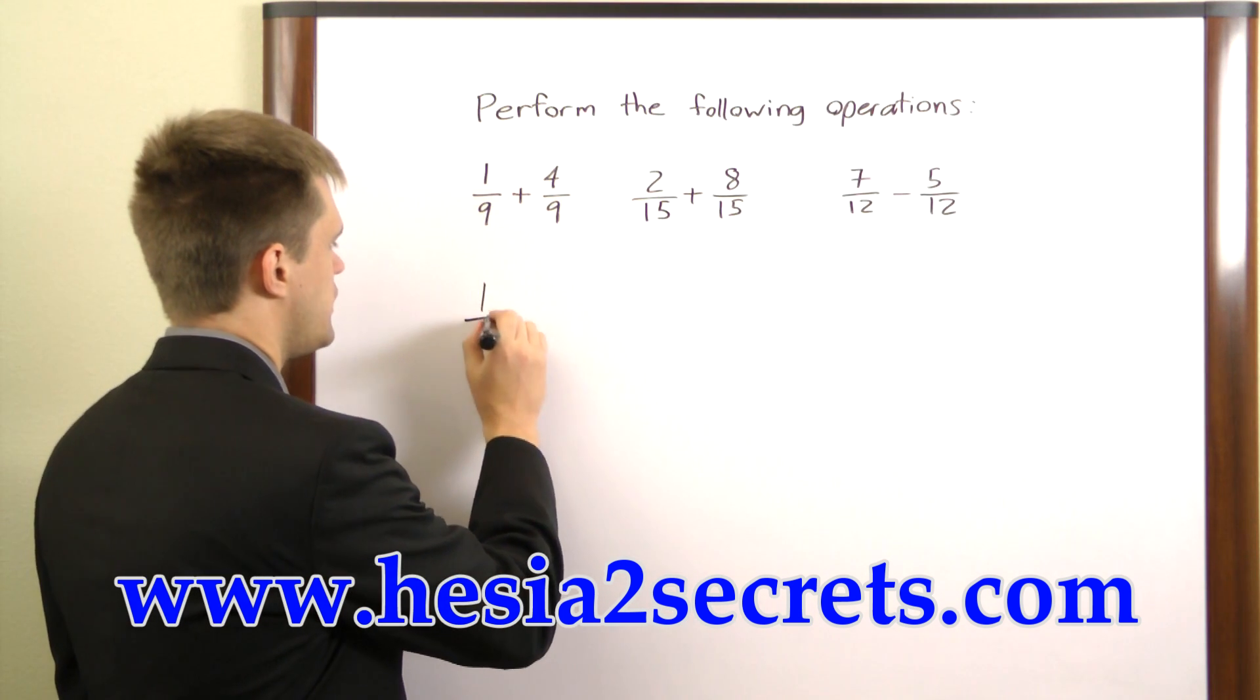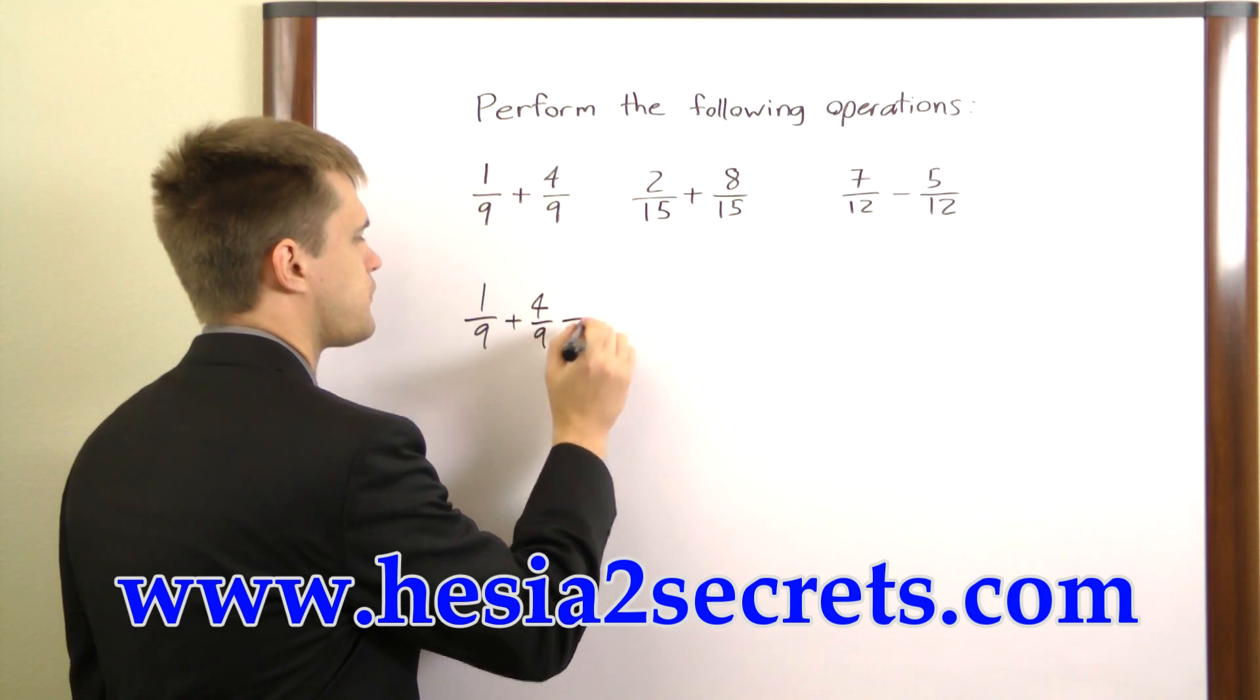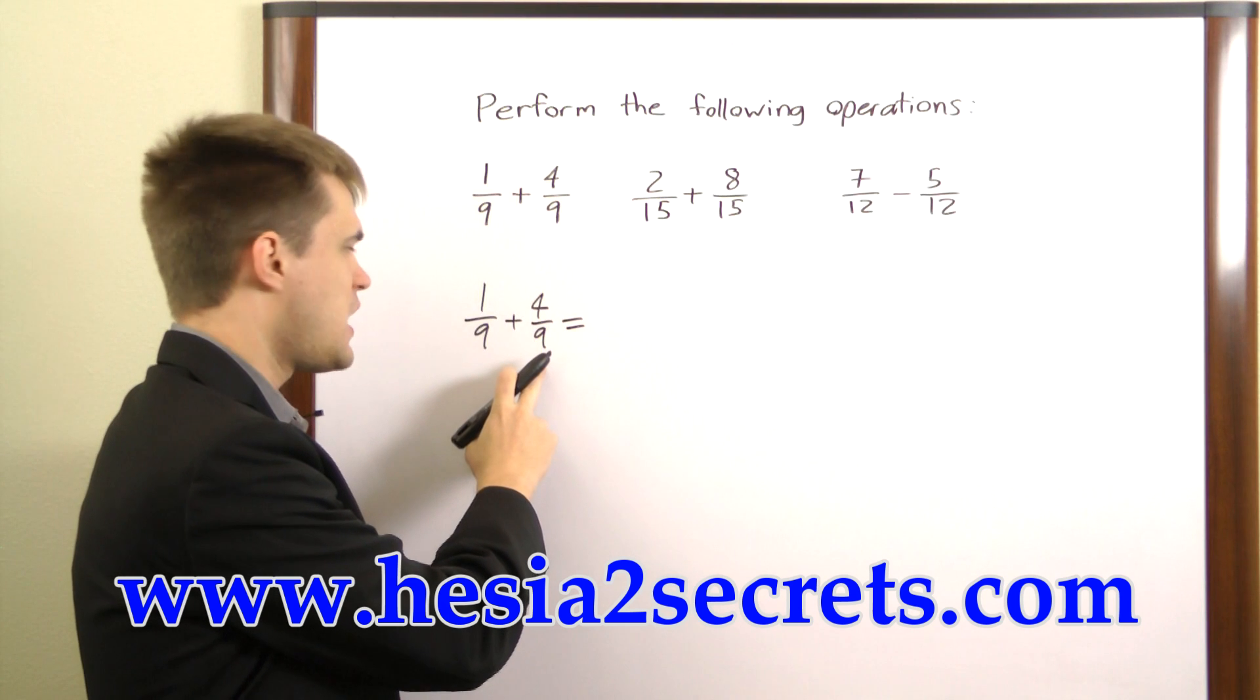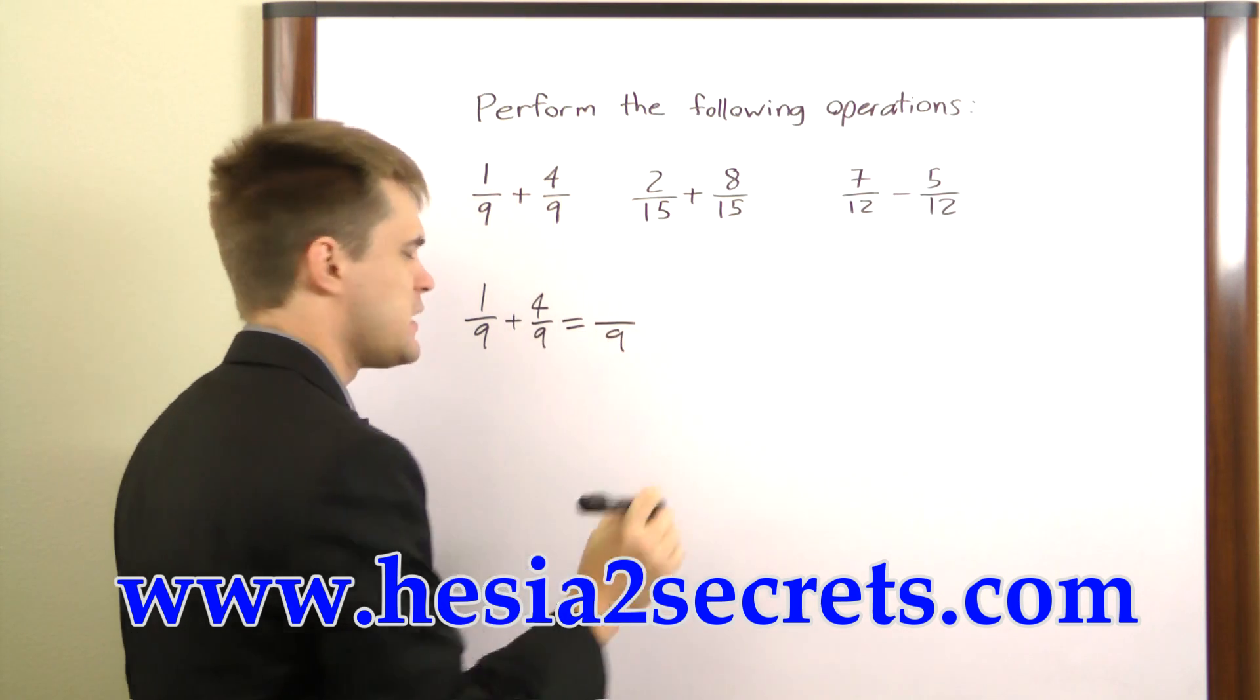First we have 1 over 9 plus 4 over 9. Now in both of these fractions we have a 9 in the denominator, so our solution is also going to have a 9 in the denominator.